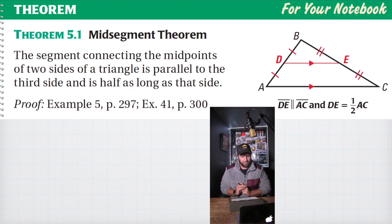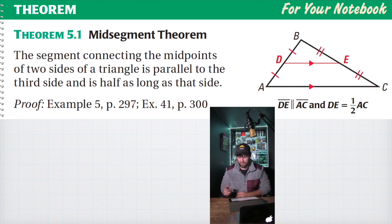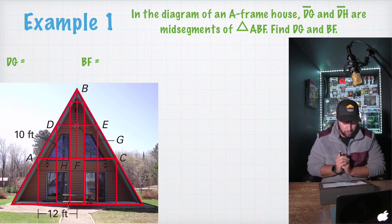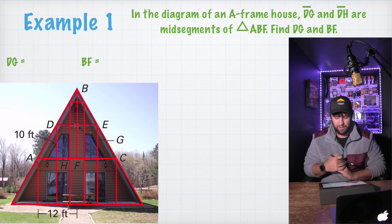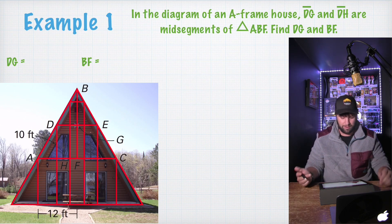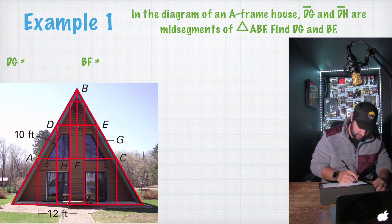Mid-segment theorem: The segment connecting the midpoints of two sides of a triangle is parallel to the third side and is half as long as that side. So DF is going to be parallel to AC and also DF is half the length of AC. So here we go. In the diagram of an A-frame house, DG and DH are the mid-segments of triangle ABF.